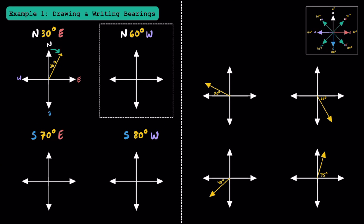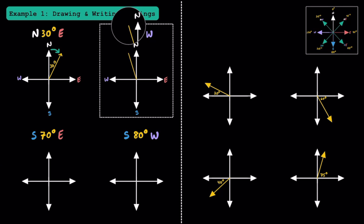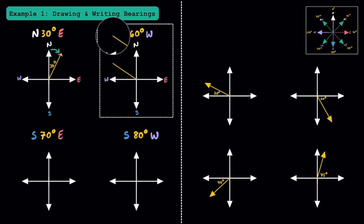Now let's try north 60 degrees west. I label my directions and start at 0 degrees pointing towards the north. Since it says 60 degrees west, we move 60 degrees towards the west direction — right about here. We started at north and moved 60 degrees towards west.